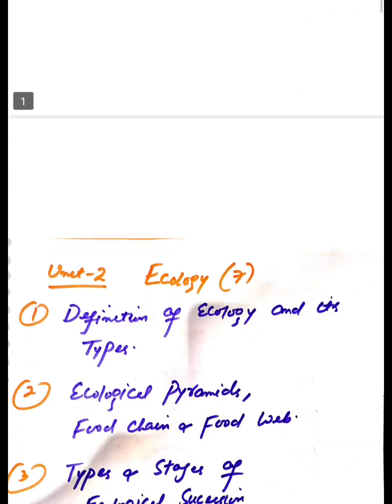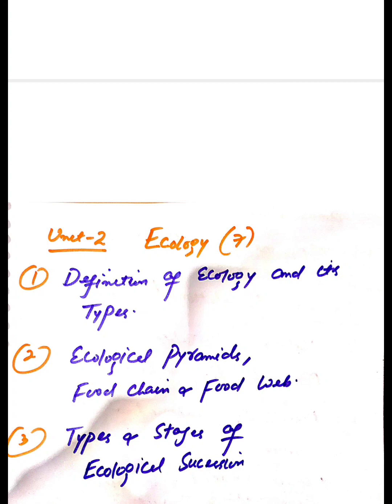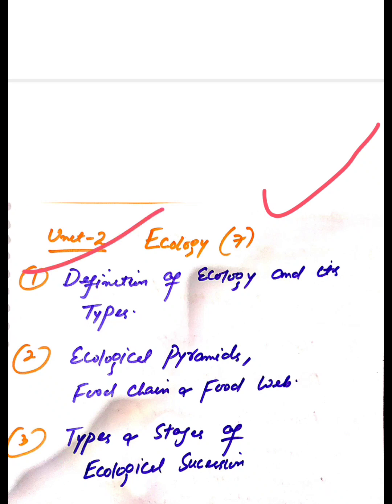Coming to Unit 2, that is Ecology. This may be 7 marks. First question is definition of ecology and its types. Second question is ecological pyramids, which includes food chain, food web, etc. You have to define these properly. Then after that, types and stages of ecological succession.